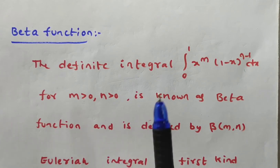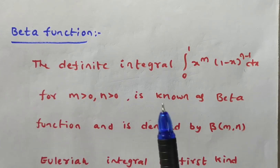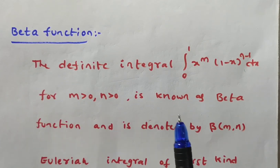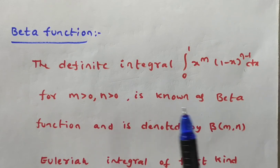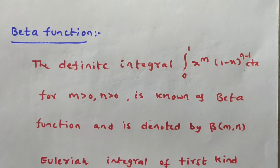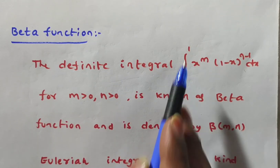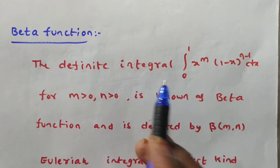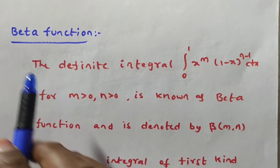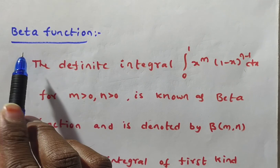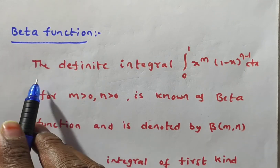We know that integrals are of two types: one is a definite integral and another is an indefinite integral. An indefinite integral does not have any limits. A definite integral has limits — those limits may be finite or infinite. Now we will discuss the Beta function definition.